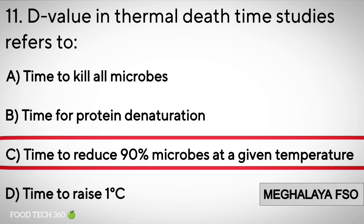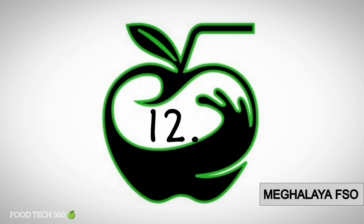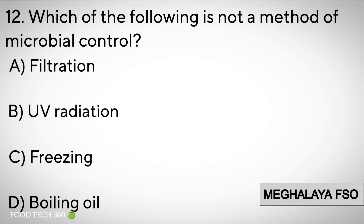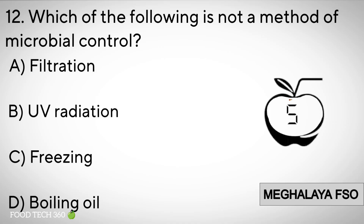Correct answer: C. Time to reduce 90% of microbes at a given temperature. Question number 12: Which of the following is not a method of microbial control? Options: A. Filtration. B. UV radiation. C. Freezing. D. Boiling oil.